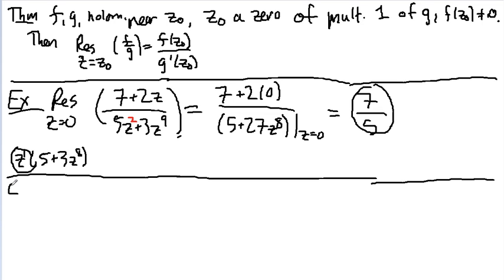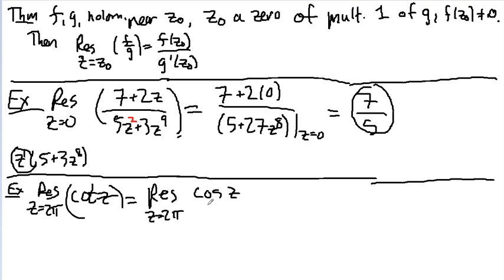Here's a second example. Let's find the residue at z equals 2π of cotangent z. Okay, well, that might not be clear how to use this, but of course you know that cotangent is equal to cosine z over sine z.